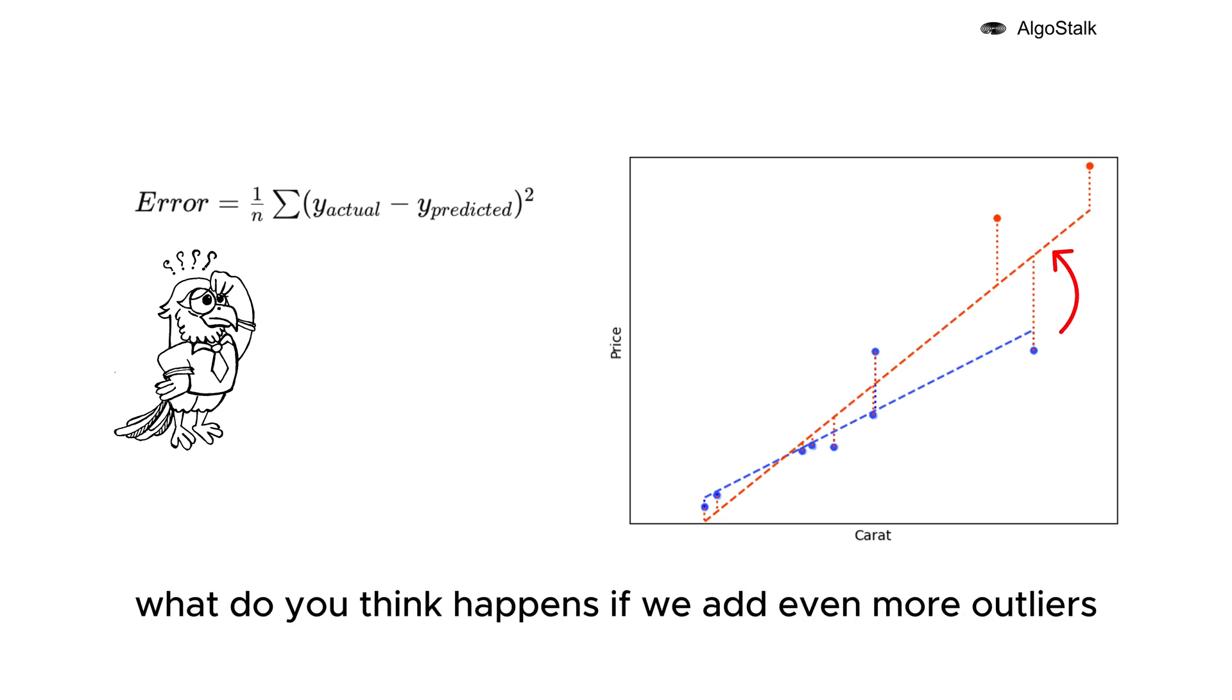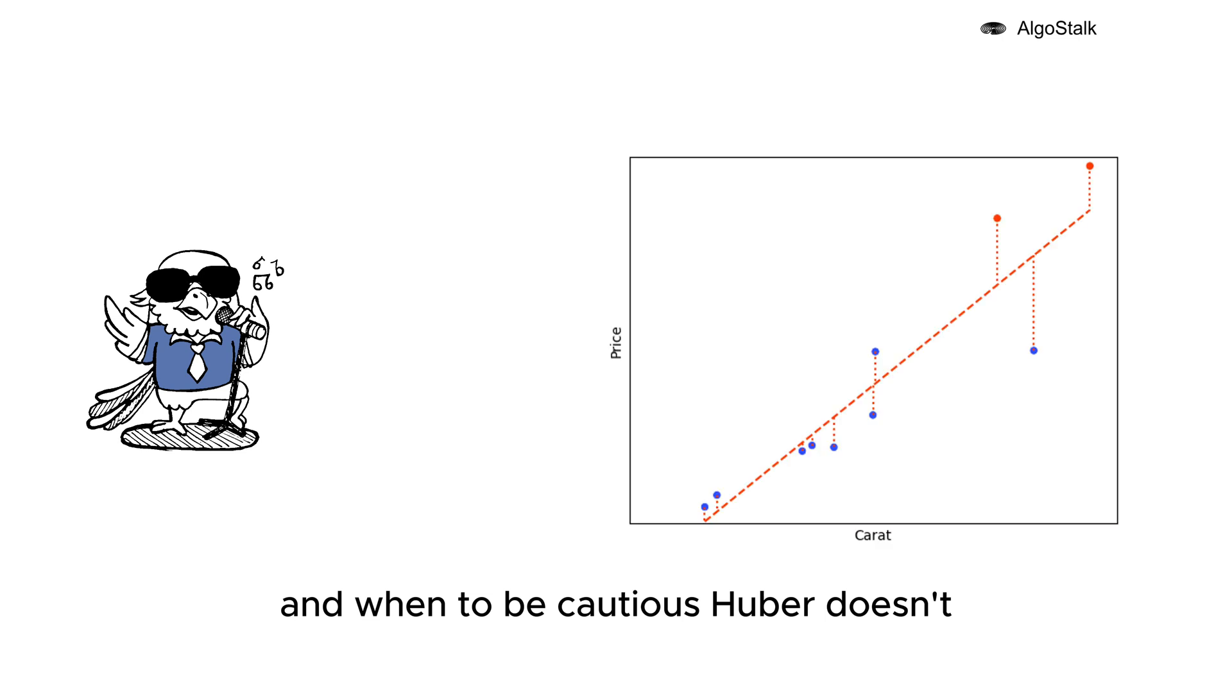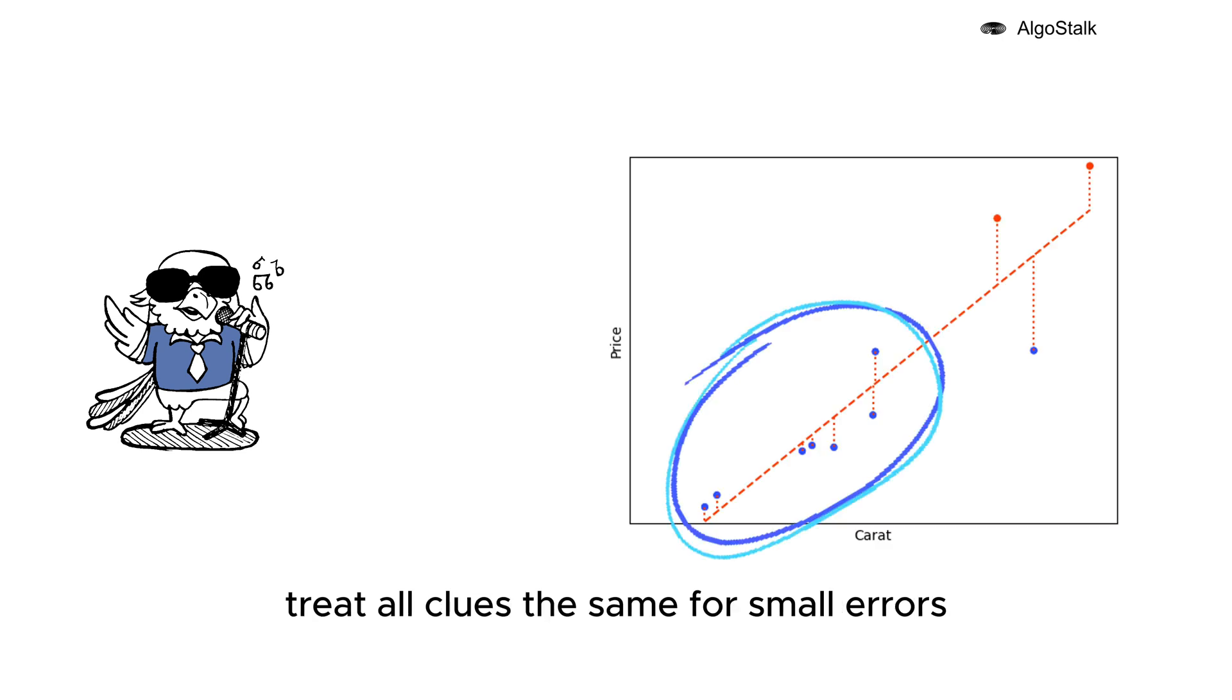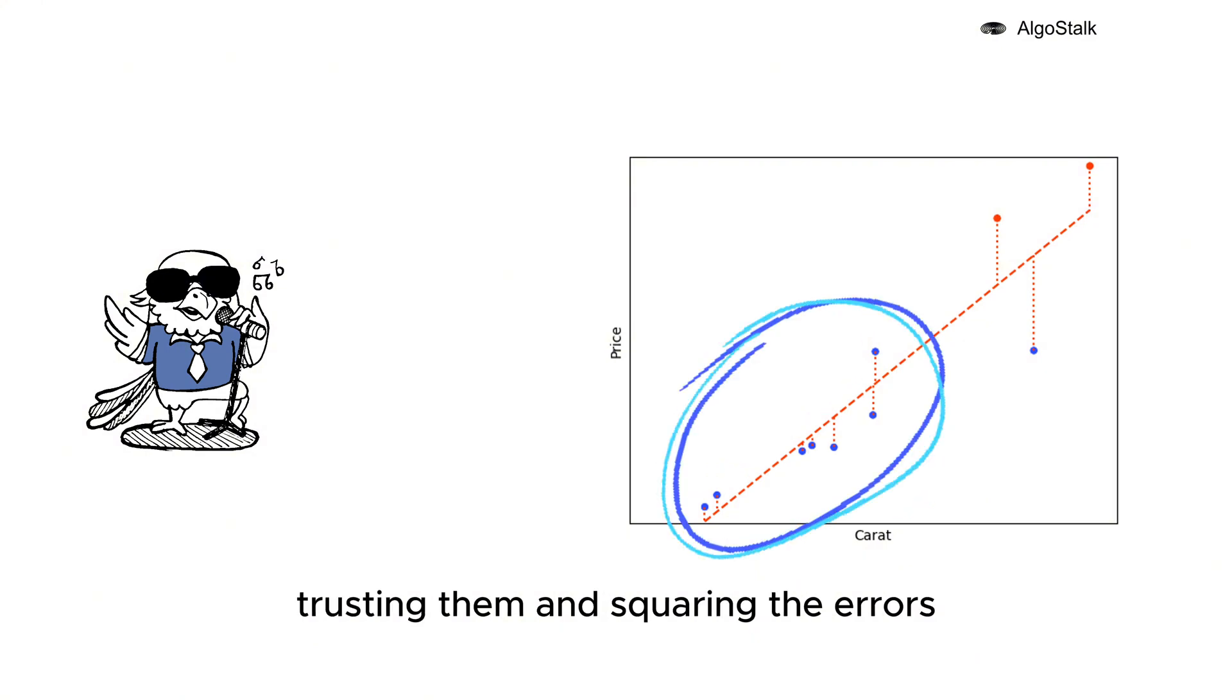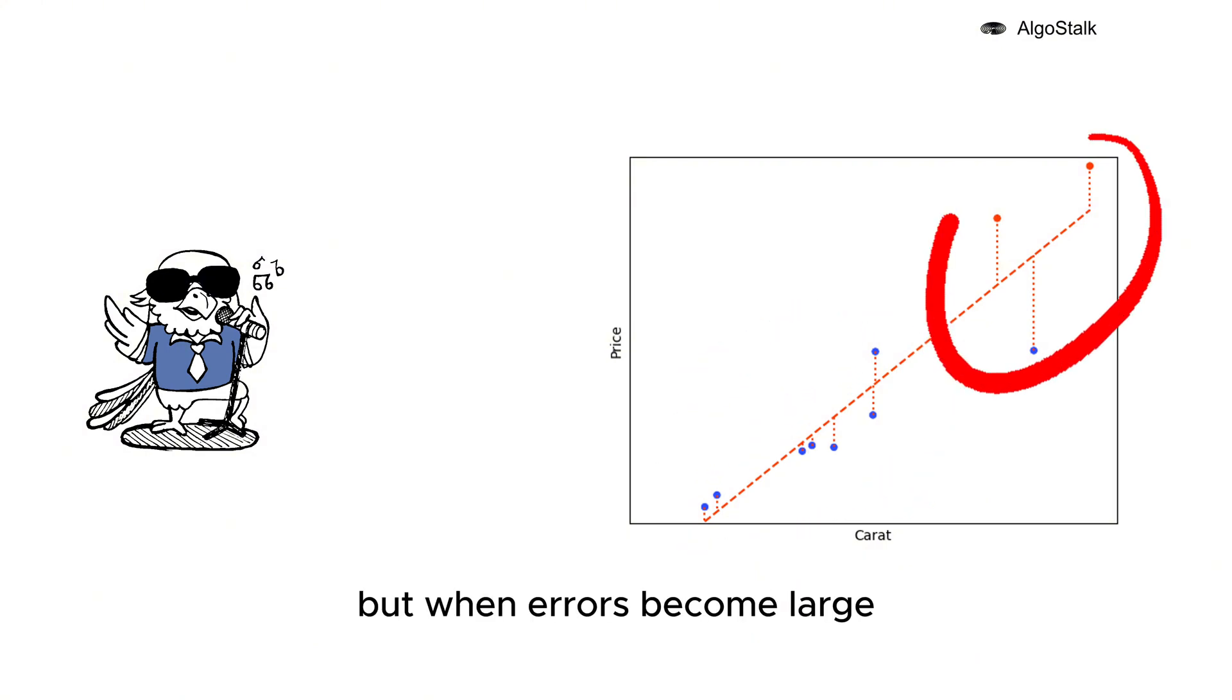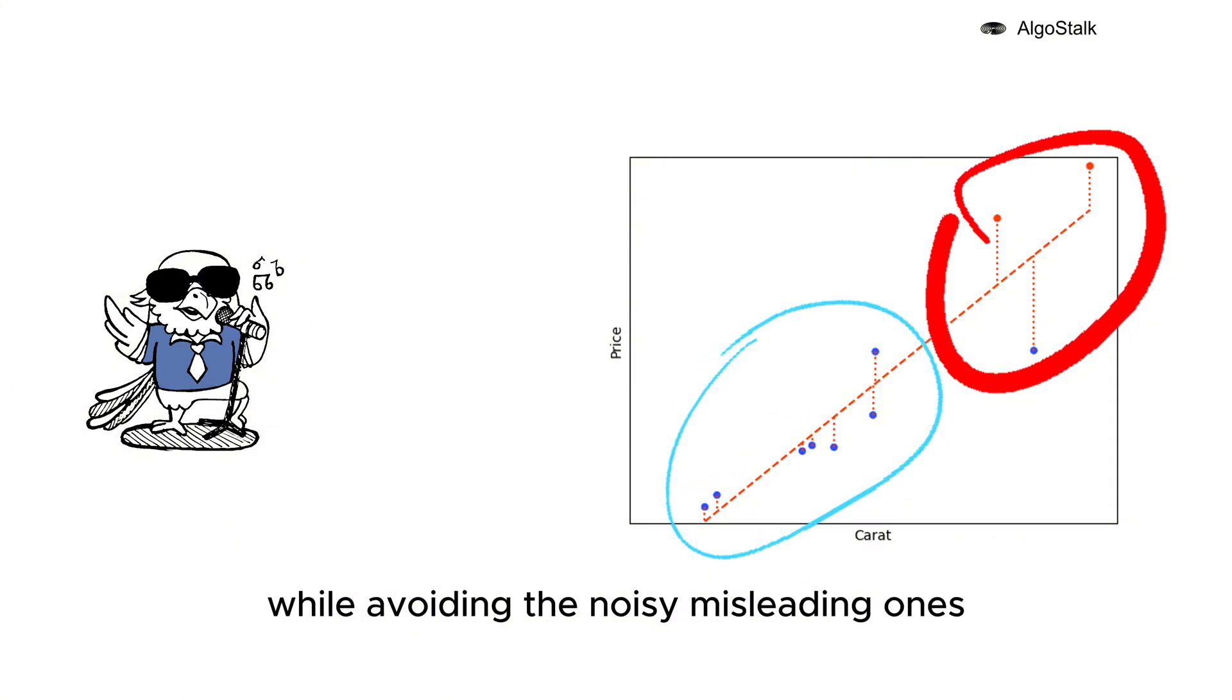What do you think happens if we add even more outliers? Introducing Huber regression: a detective that knows when to trust and when to be cautious. Huber doesn't treat all clues the same. For small errors it acts like linear regression, trusting them and squaring the errors. But when errors become large, it switches to mean absolute error, downplaying the influence of outliers. This balance helps Huber focus on the most important clues while avoiding the noisy, misleading ones.